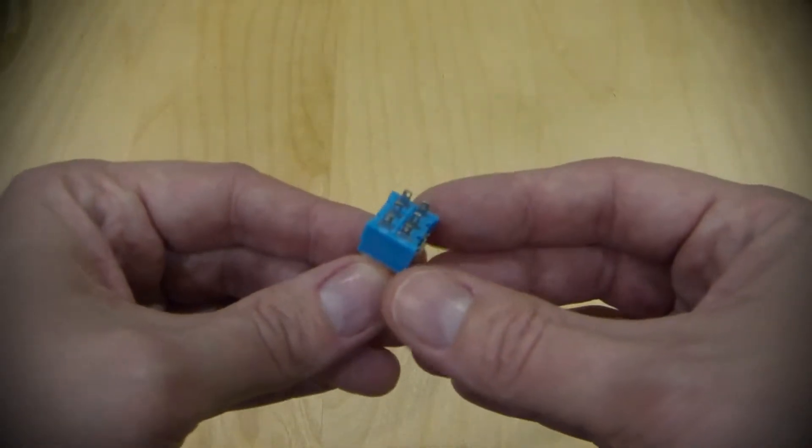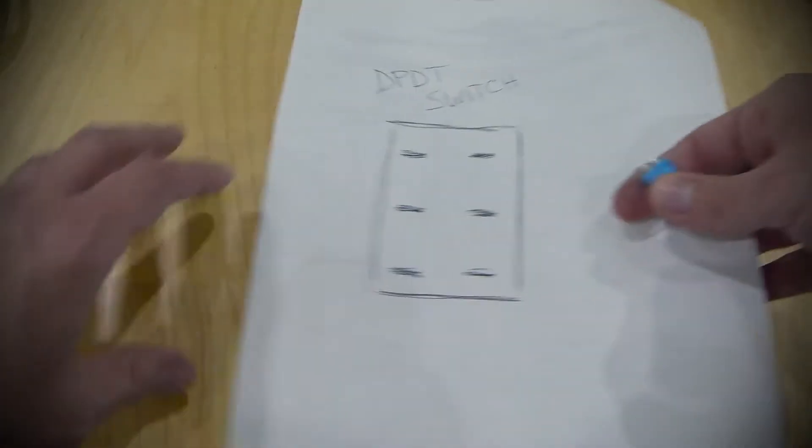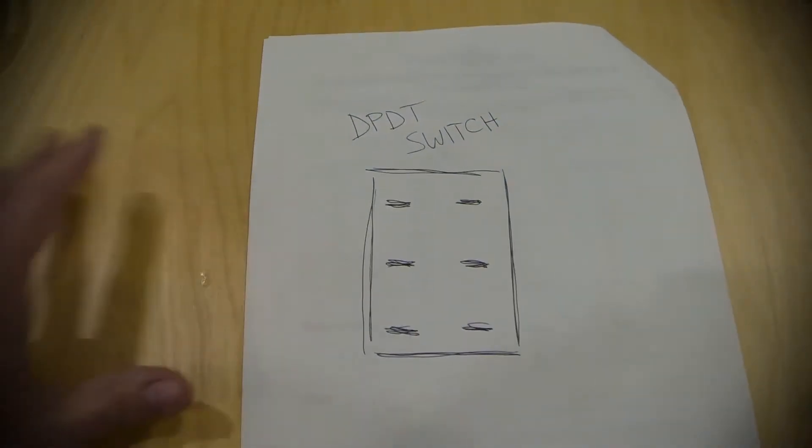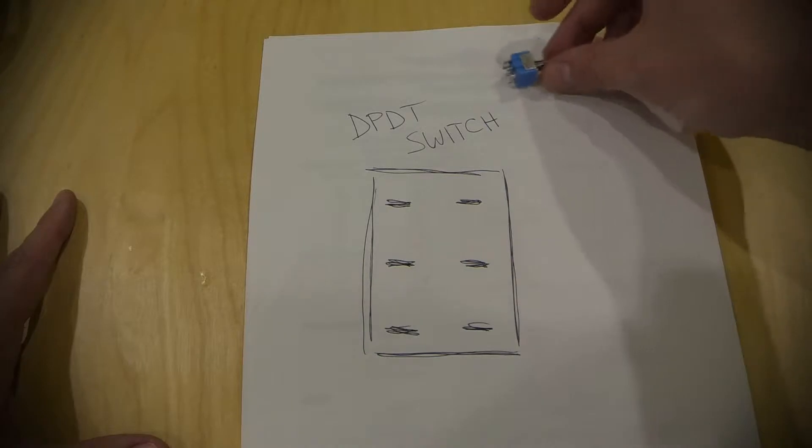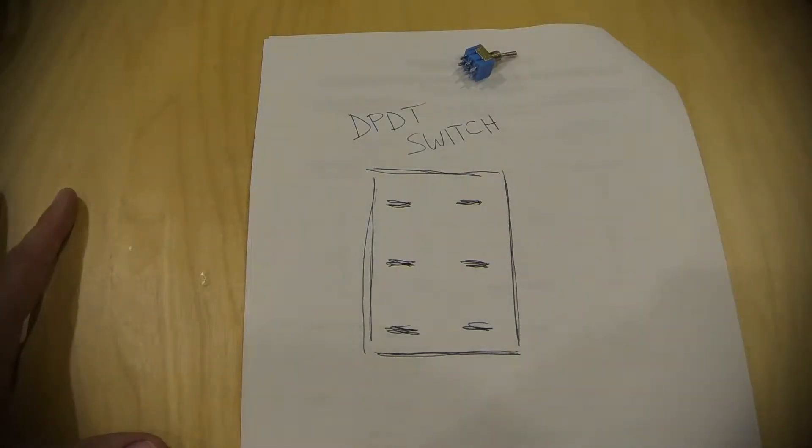And since this guy's kind of hard to see on my camera, I'm actually going to draw this out on a diagram. So, here's our diagram of our dual-pull, dual-throw switch. I'll leave it right there as reference.